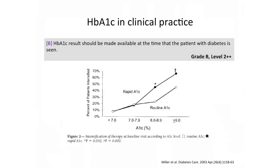An interesting study done more than 10 years ago randomized patients into two groups: one had HbA1c results available at the point of consultation, the other received results after consultation. Those with HbA1c available at consultation had more intensification of treatment, resulting in better A1c control. In the hospital setting we take this for granted, but the point is: having HbA1c at the point of consultation enables timely intensification. After a patient visit, it's always difficult to recall results and explain the rationale for intensification.